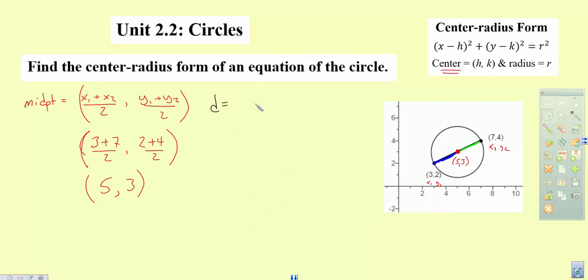And so we found out recently the distance formula is equal to the square root of x sub 2 minus x sub 1, x2 minus x1 quantity squared, plus y2 minus y1 quantity squared.